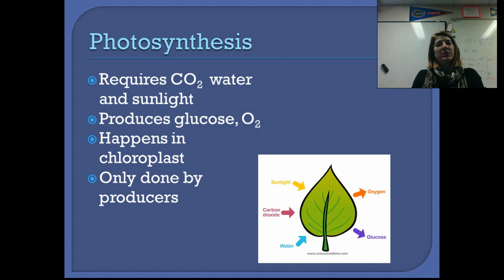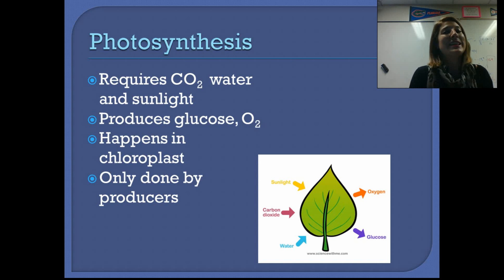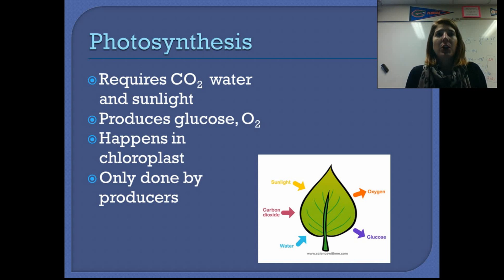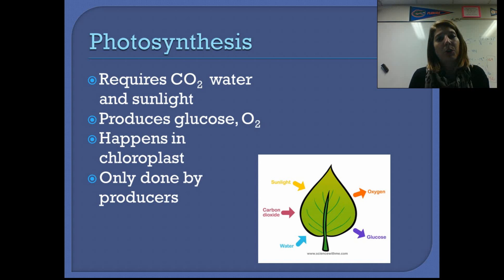Onto photosynthesis — this is a huge part of the carbon and energy cycle. Plants are responsible for taking carbon dioxide out of our atmosphere and turning it into glucose. During that process, they also create oxygen, which is great news for us. This all happens in an organelle called the chloroplast, which contains a pigment called chlorophyll — that's what makes plants green. Photosynthesis is only done by producers; humans don't do photosynthesis. We have to consume our energy and eat our carbon in the form of glucose, but plants are unique in that they can use energy from sunlight and carbon from the atmosphere to create glucose, which is a usable form of energy for you and me.